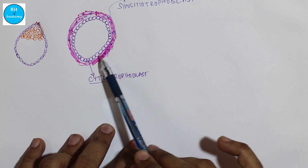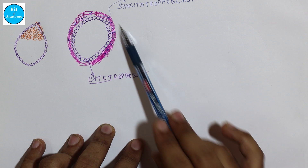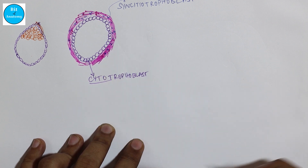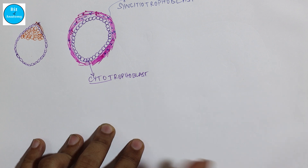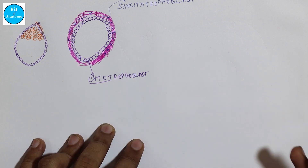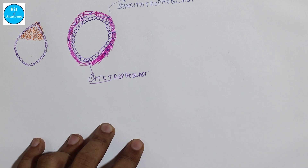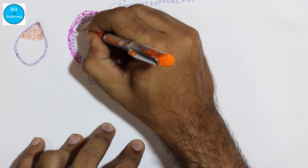So these are the two different layers of the trophoblast: the cytotrophoblast in the inner aspect and the syncytiotrophoblast in the outer aspect. There will be numerous changes that occur in both layers and they are destined to form the placenta. Further development of the trophoblast will be covered in the development of the placenta.